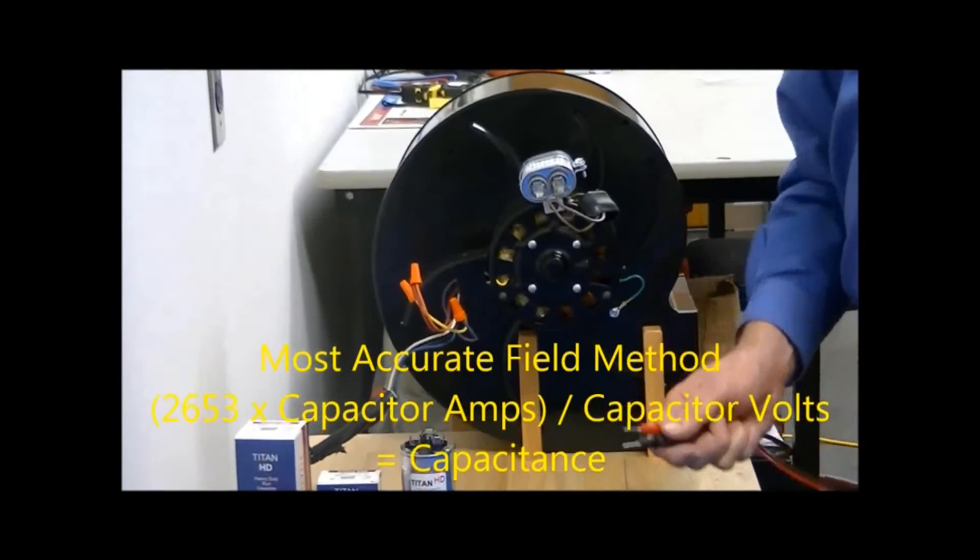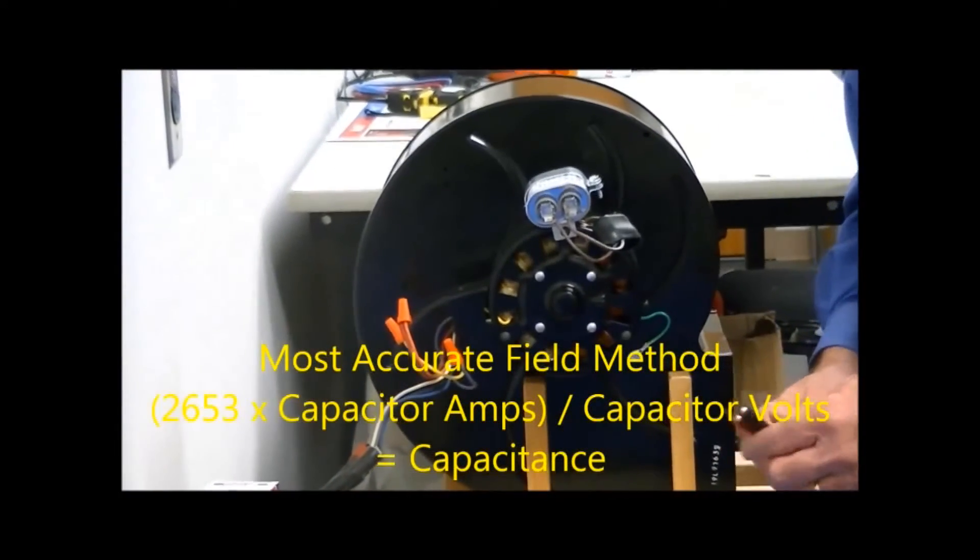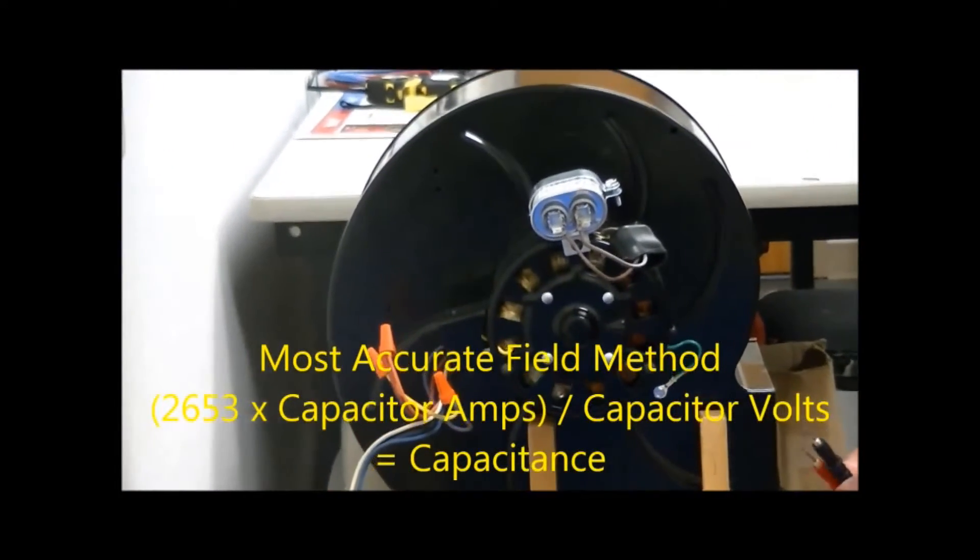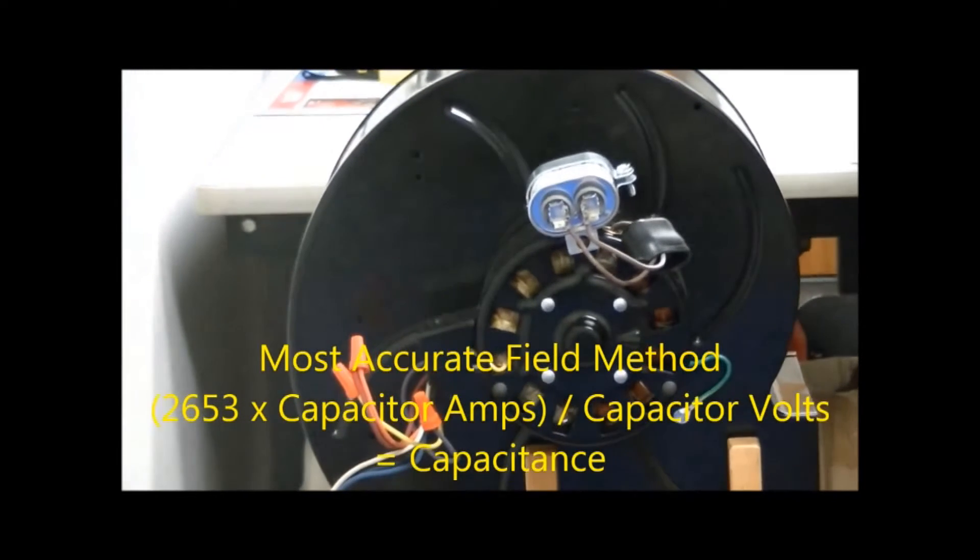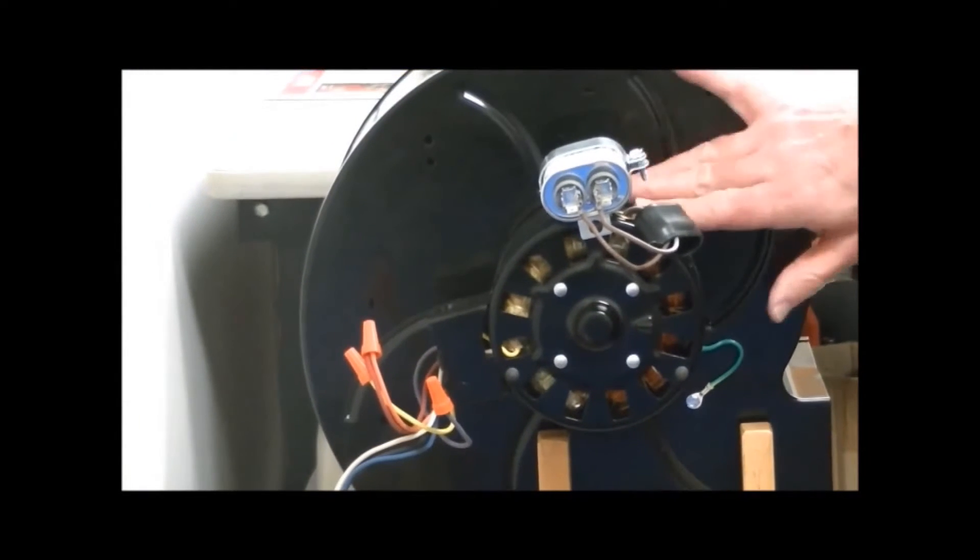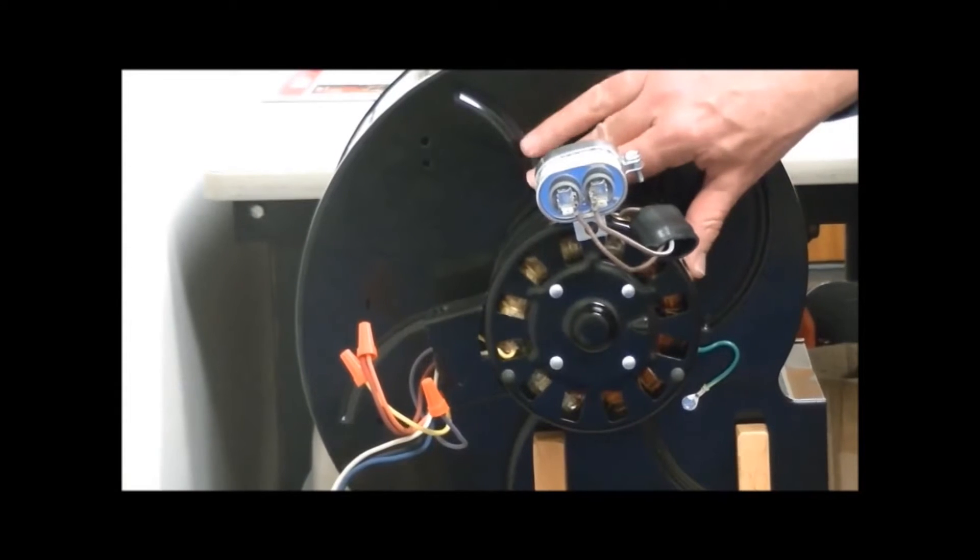We'll use the formula 2653 times capacitor amps, divided by capacitor volts, to see what the capacitance is that's actually going to the motor.